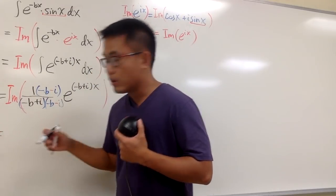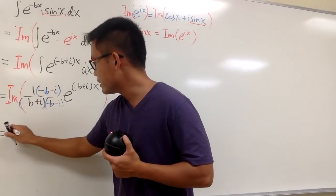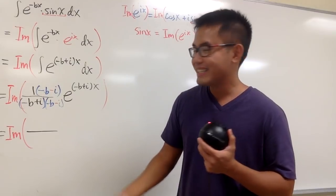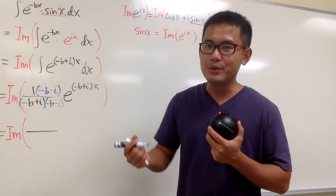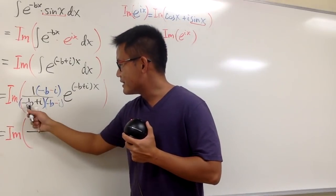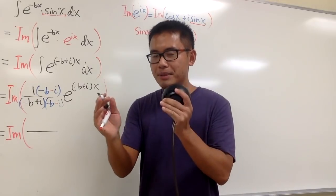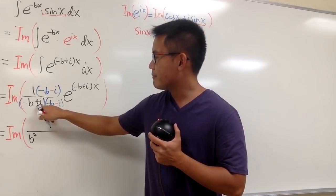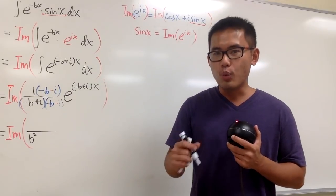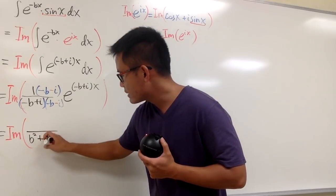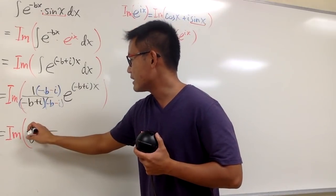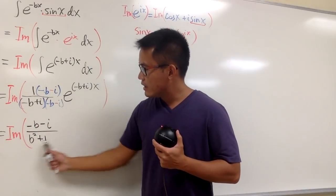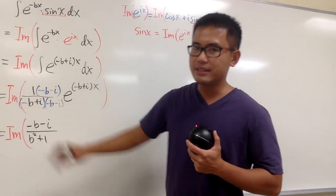We are still looking for the imaginary part. On the bottom, using difference of squares: (negative b) squared minus i squared. That's b squared, and minus i squared — since i squared equals negative 1, this becomes minus negative 1, which is plus 1. So the denominator is b squared plus 1. On the top, 1 times (negative b minus i) is just negative b minus i.